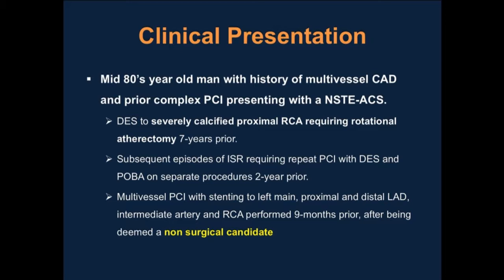He had progressed over time and was identified about nine months prior to this presentation to have severe disease in the left main, proximal LAD, ramus, and right coronary artery, but was deemed a non-surgical candidate. So just nine months prior, he had undergone complex multivessel PCI with stenting of the left main, proximal and distal LAD, ramus, and right coronary artery. Now he's presented with non-ST elevation ACS.